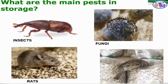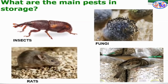For forestry seeds, the majority of pests are insect pests, fungal organisms, and rats. Birds are less of a concern compared to agricultural crops. The most damaging storage pests for forestry seeds are insect pests, fungi, and rats.